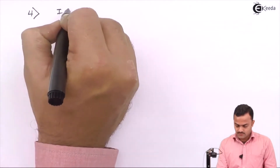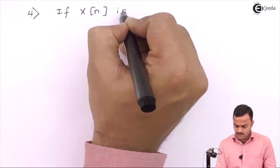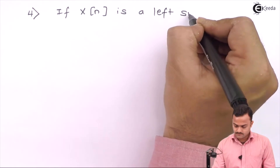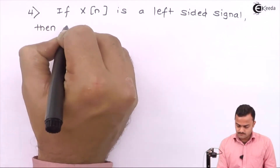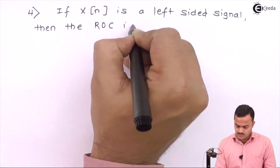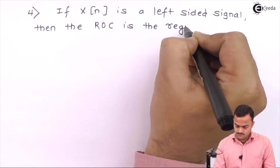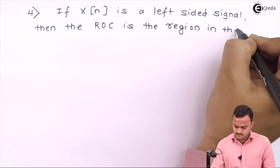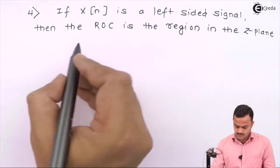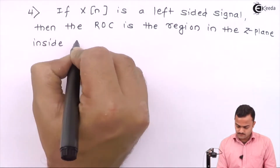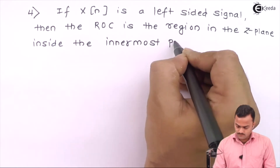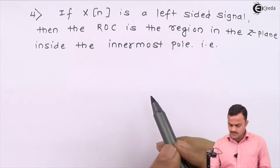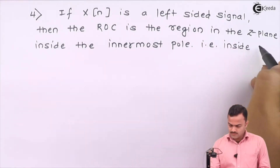Property number 4: if x(n) is a left-sided signal, then the ROC is the region in the Z-plane which is inside the innermost pole.